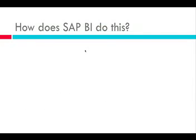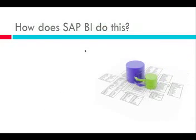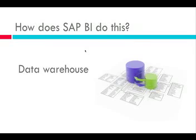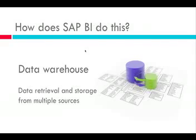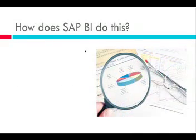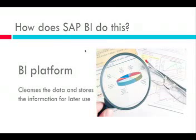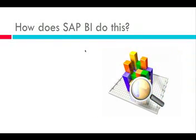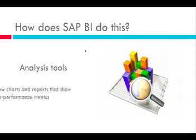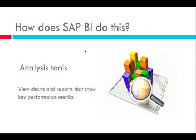So how does SAP do this? First of all, it provides a data warehouse where you can retrieve data from. It retrieves data from different source systems and aggregates all this into one location. The second step is the Business Intelligence platform that cleanses the data, removes duplicates, and transforms it into a format that can be used later. On top of that, we have the analysis tools that will be used to display reports from queries run from the data in the Business Intelligence platform.